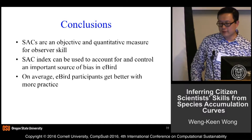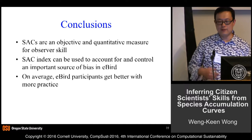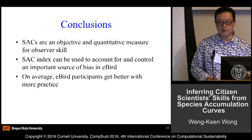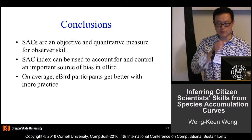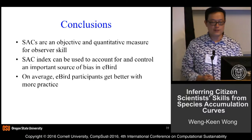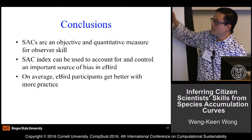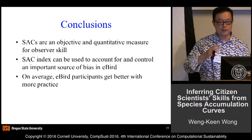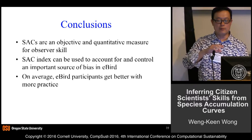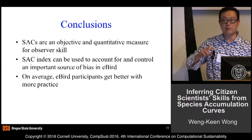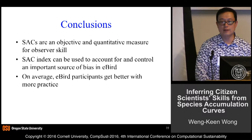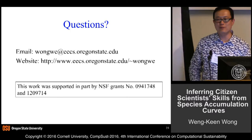To wrap up: species accumulation curve indices have been shown to be very effective as a quantitative and objective measure of observer skill. They're great for accounting for sources of bias. And we're one of the few citizen science projects to have run a study where we looked at our participants and can see signs that they are actually getting better with more practice as they get involved with eBird. Thank you very much.